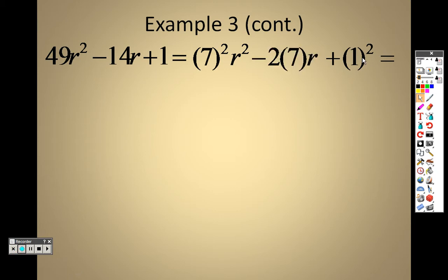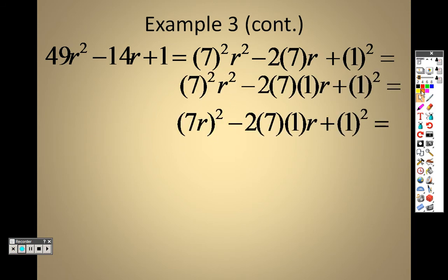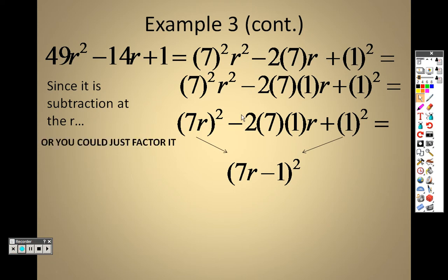Can I multiply that by negative 2 and get negative 14? You betcha. Negative 2 times 7 is negative 14. So the whole first term is a 7r. The whole last term is a 1. So that means I take the first term and the last term, and I subtract them and square it. And I know it's subtraction because it's subtraction there the entire way down.